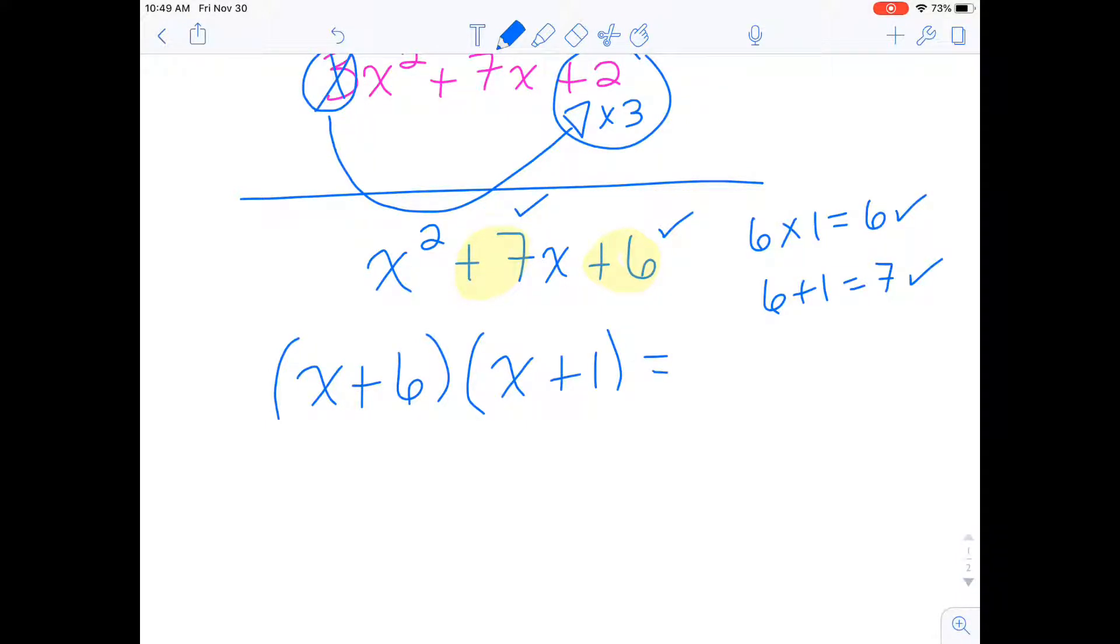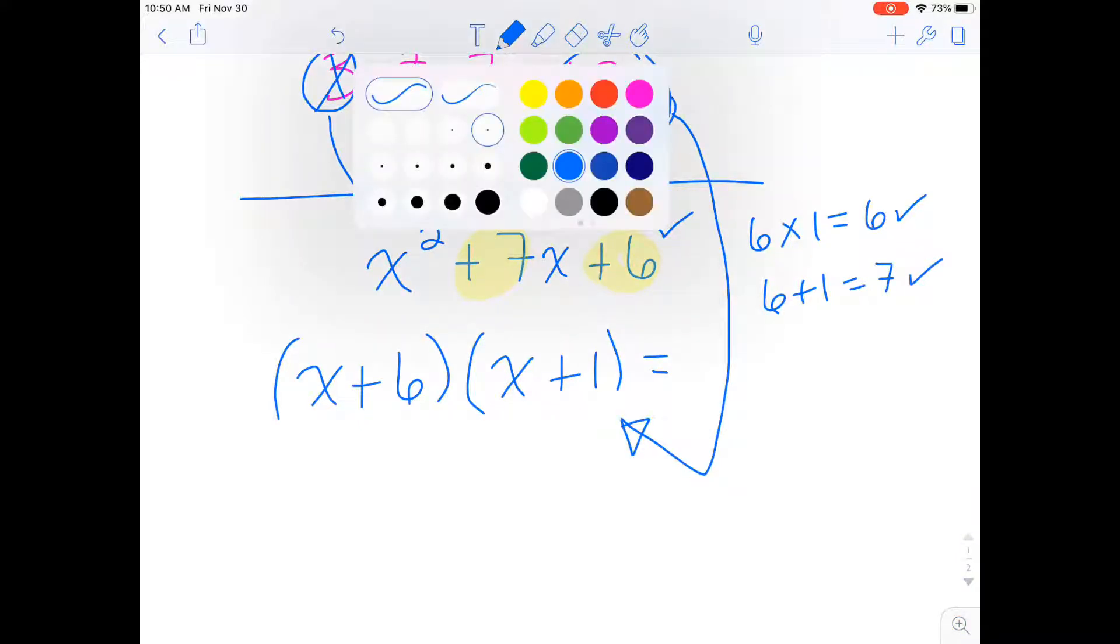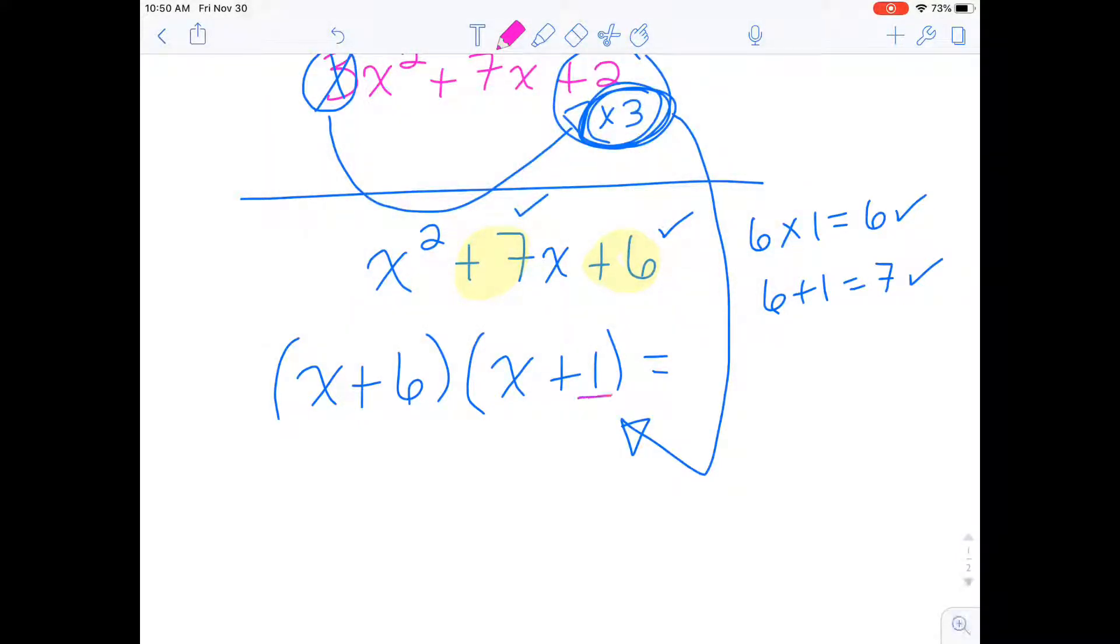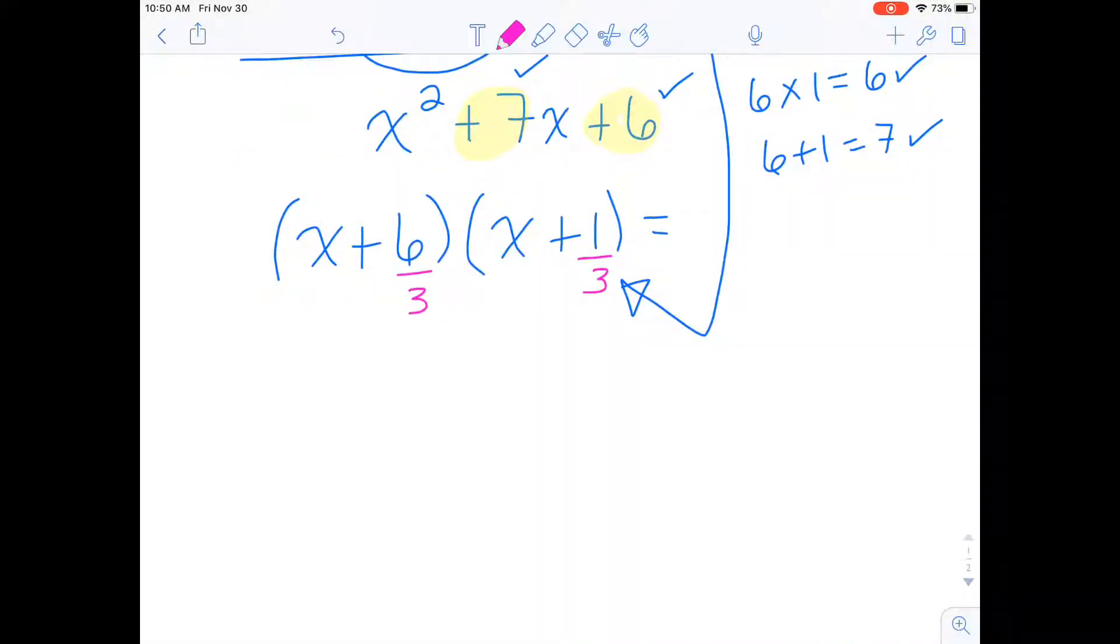So we have done the first step. Now the second step is to divide. We need to take this 3 and use it one more time. We're going to take this 3 and divide it by the numbers we used in our factors. And then let's see if we can reduce anything. Let's look at our first factor here. Can I reduce 6 divided by 3? Yes. 6 divided by 3 is 2.